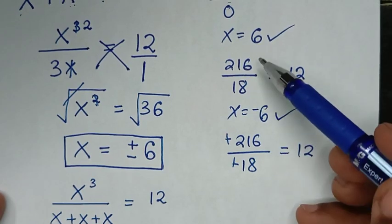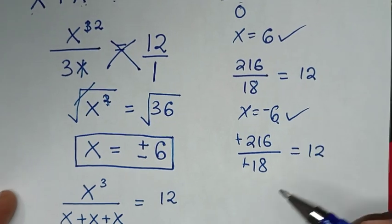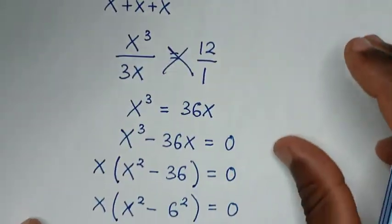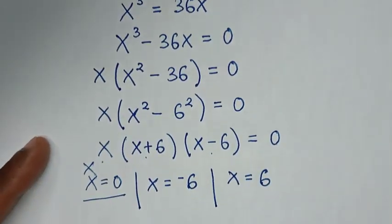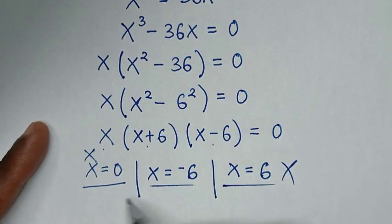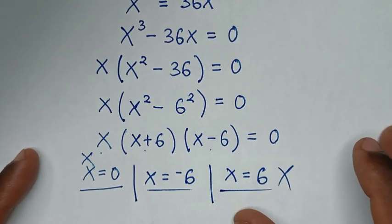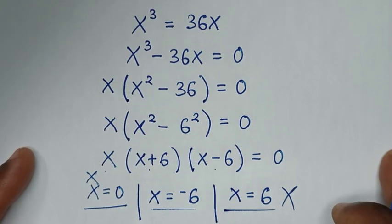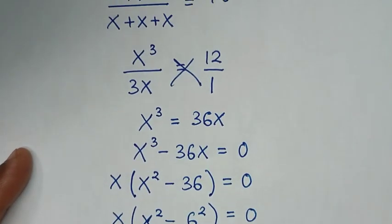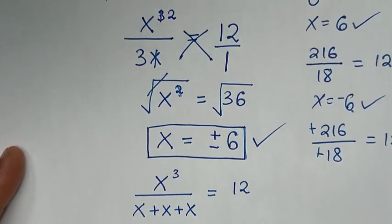So our answer is 6 and negative 6. The first method is the correct method, but the second method giving three solutions is not the correct method. Thank you for watching — subscribe to my channel and see you in the next video, bye bye.